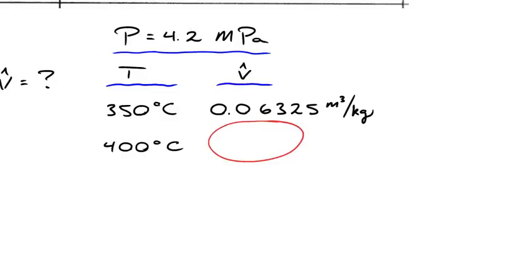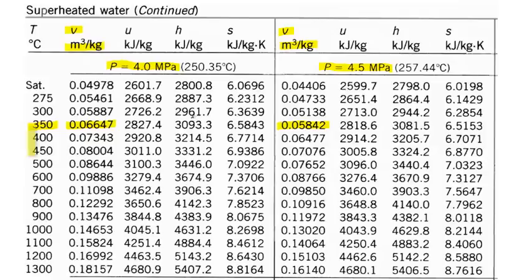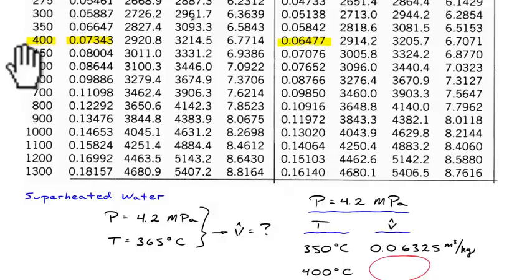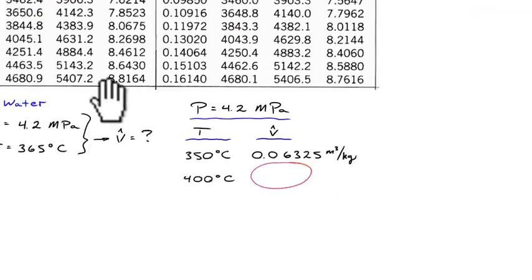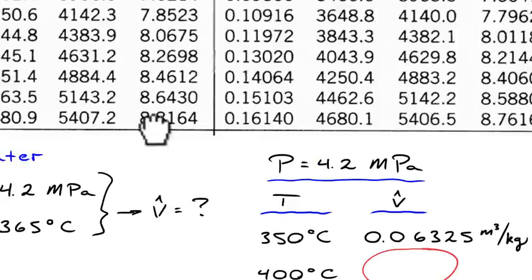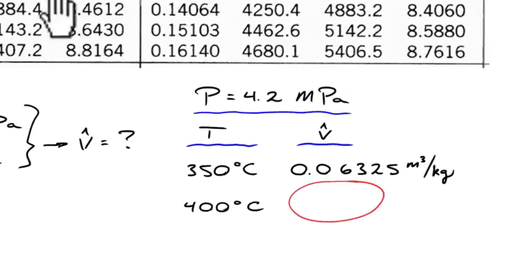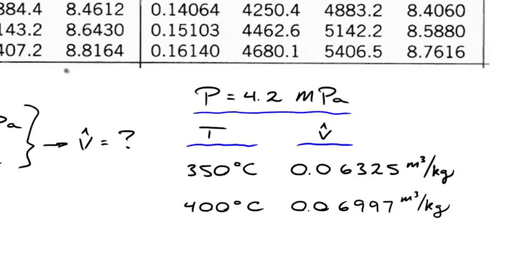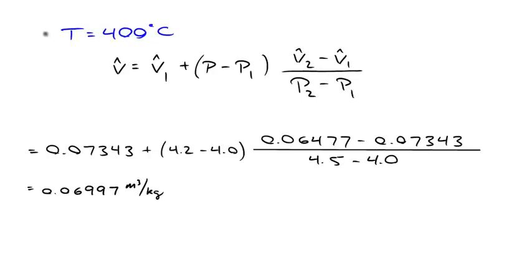We need to repeat the interpolation at 400 degrees C. The numbers needed at 400 degrees C are just below the 350-degree entries in the table. Running the same interpolation calculation, the specific volume at 400 degrees C and 4.2 megapascal comes out to 0.06997 cubic meters per kilogram.